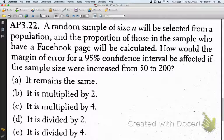We have a random sample selected from a population. The proportion of those in the sample will be calculated. How will the margin of error for a 95% confidence interval be affected if the sample size were increased from 50 to 200?